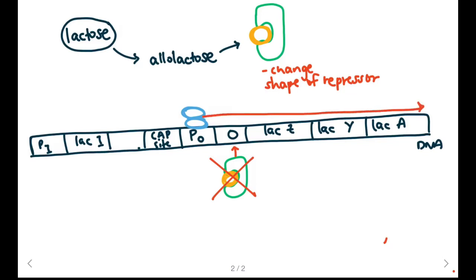This will result in a polycystronic mRNA that consists of the lac Z, lac Y, and lac A genes.